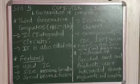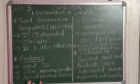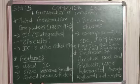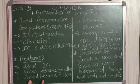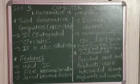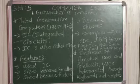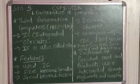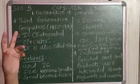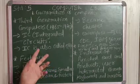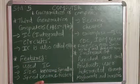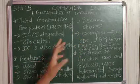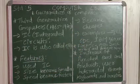First and second generation ki comparison mein third generation ki computer ki speed kaisi ho gayi hai? Fast ho gayi hai. The speed become faster. Become cheaper than ever. Wo cheaper bhi ho gayi hai, yaani sasta bhi ho gayi hai.